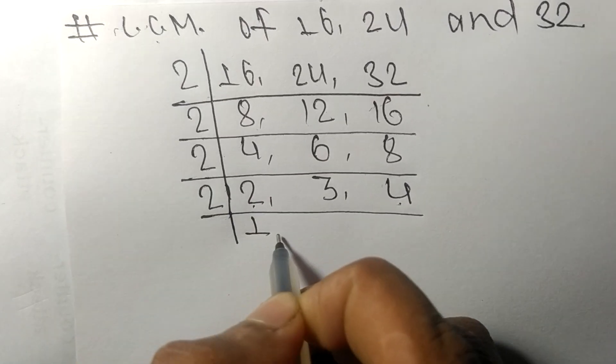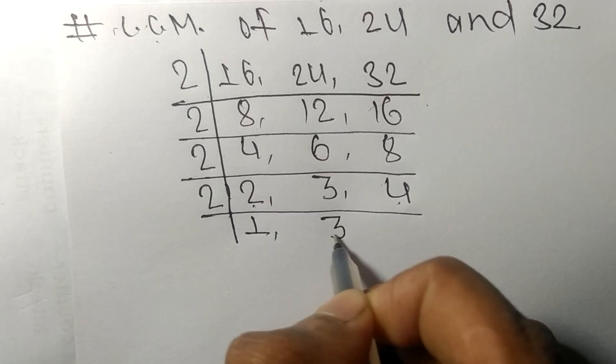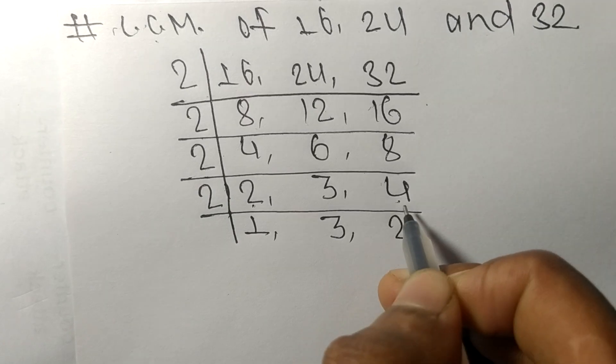2 times 1 is 2, 3 not divisible so it stays the same, 2 times 2 is 4.